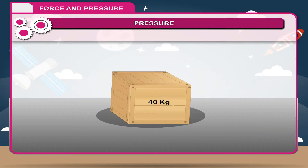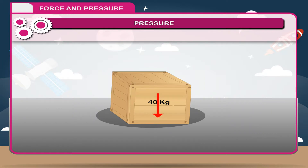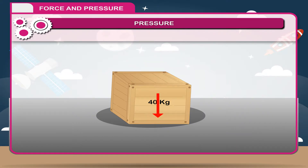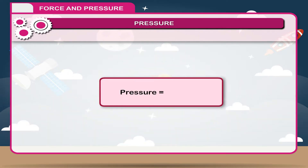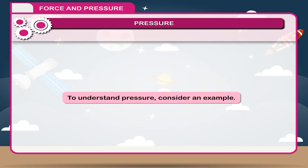When a body is placed on a surface, it exerts a force equal to its weight on the surface. The force acting normally on a surface is called thrust. The thrust acting per unit area of surface is called pressure. Thus, pressure is equal to thrust divided by area. To understand pressure, consider an example.